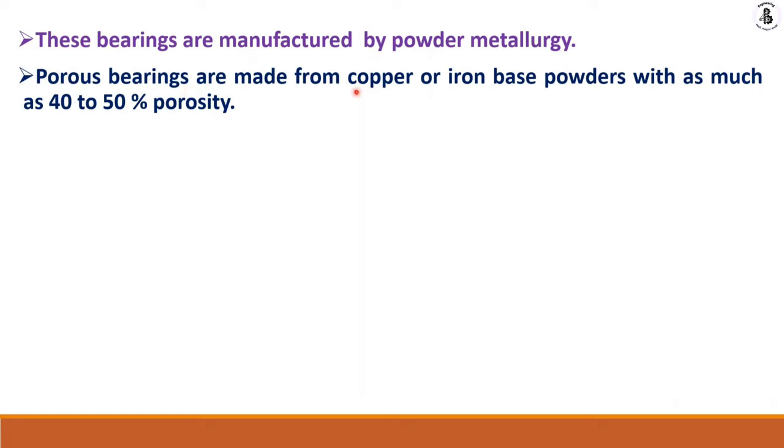Porous bearings are made from copper or iron-based powder with as much as 40 to 50% porosity, which is only possible with powder metallurgy process. They are impregnated with oil.